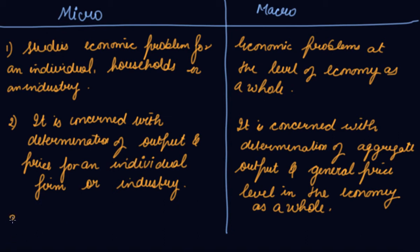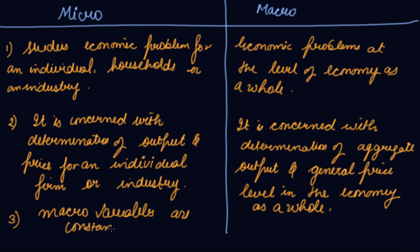Difference number three: the study of microeconomics assumes that macro variables remain constant — that is, aggregate output is given while we are studying the determination of output and price for an individual firm or industry. In macroeconomics, the micro variables remain constant.